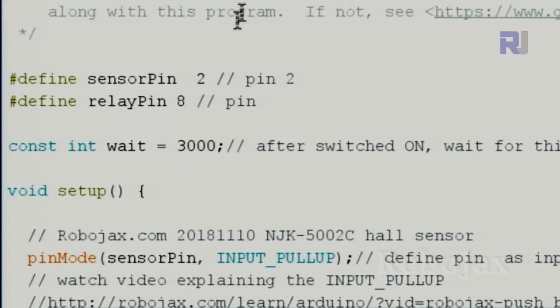Let me now explain the code. We first define the sensor pin as pin 2. You can use any digital pin that you want to use. Make sure it's available. This is the relay pin, pin 8. This wait variable of type integer is 3000 milliseconds or three seconds. This is the amount of time that when the switch turns on the relay, you want to wait this amount of time. If you want it to be real-time, just make it zero.